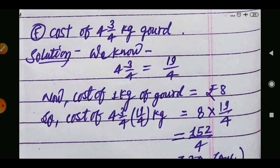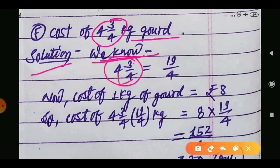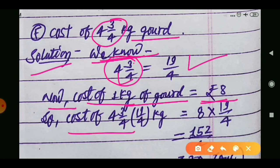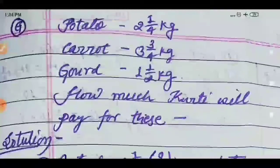Question f: find the cost of 4 whole 3 upon 4 kilograms of goad. Convert the mixed fraction: 4 whole 3 upon 4 equals 19 upon 4, because 4 times 4 is 16, and 16 plus 3 is 19. Cost of 1 kilogram goad is 8 rupees. So cost equals 8 into 19 upon 4, which is 152 upon 4, equal to 38 rupees. Hence, the cost of 4 whole 3 upon 4 kilograms of goad is 38 rupees.